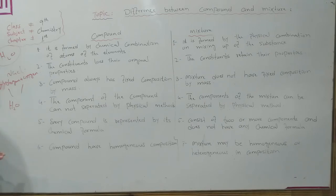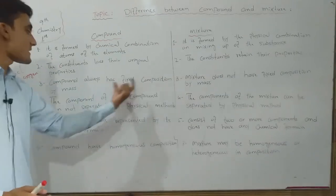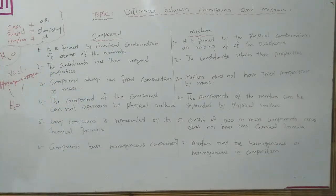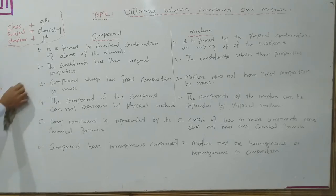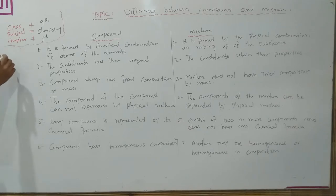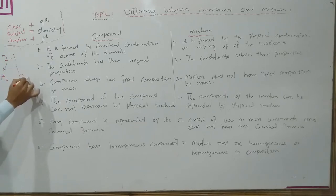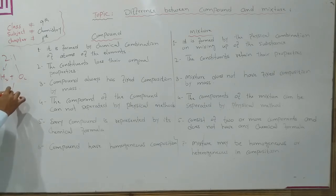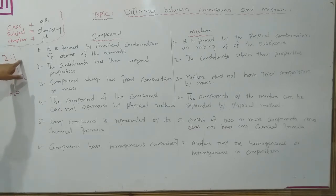Number 3: Compound always has a fixed composition by mass. The compound is given a fixed ratio. For example, if you have water, you combine hydrogen and oxygen. The ratio of the two is always 2:1 — two parts hydrogen and one part oxygen — giving H2O. For NaCl, the ratio is always 1:1.